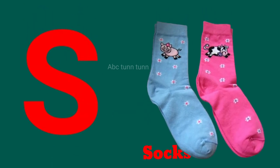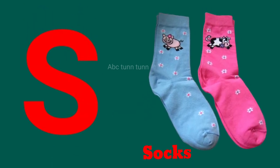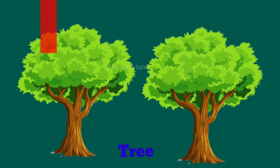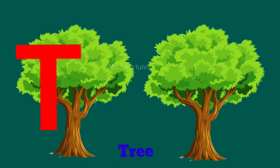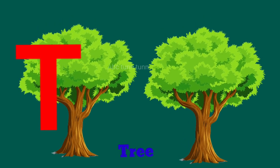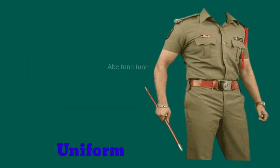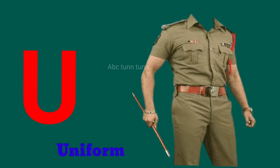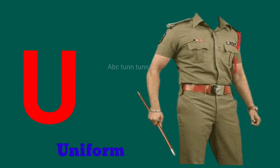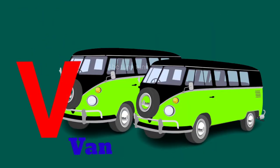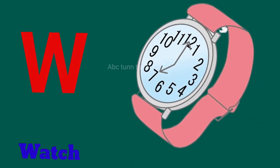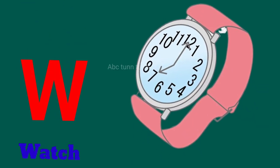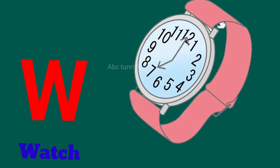S for sock. Q for queen. U for uniform. V for van. W for watch.